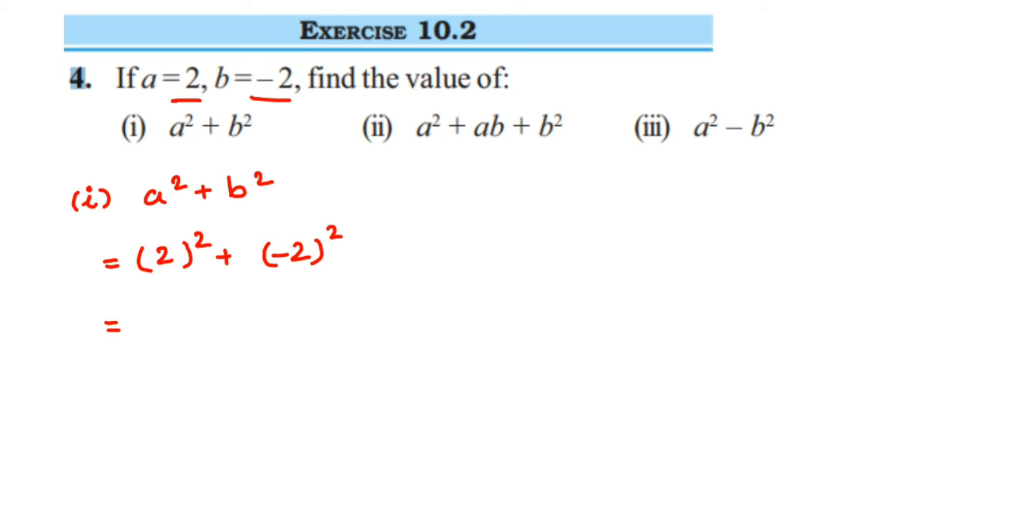2 squared is 4, which is 2 times 2 equals 4. Plus minus 2 squared is minus 2 times minus 2. 2 times 2 is 4, and minus times minus becomes plus, so we get plus 4. 4 plus 4 equals 8.